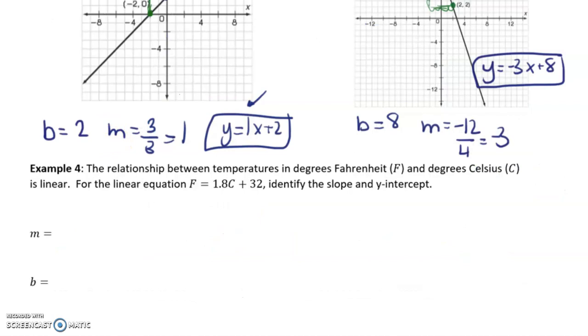Okay, example 4, the relationship between temperatures in degrees Fahrenheit and degrees Celsius is linear. For the linear equation f equals 1.8c plus 32, identify the slope and the y-intercept. So, the slope is 1.8 and the y-intercept is 32. So, the exact same thing reading an equation but just this time in the form of a word problem.